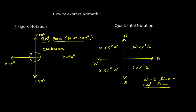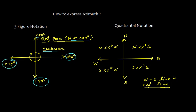Now let's talk about how to express azimuth. We can express azimuth as a three-figure notation. We start with the reference point that is north, or 000, and go in the clockwise direction. So this is 090, this is 180, this is 270, and again this is 360.